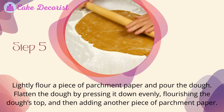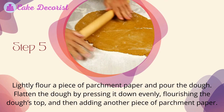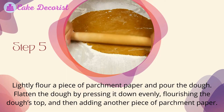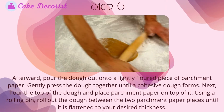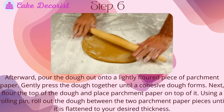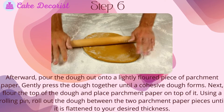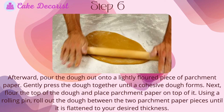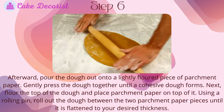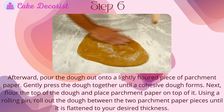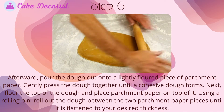Step five: lightly flour a piece of parchment paper and pour the dough onto it. Flatten the dough by pressing it down evenly, flour the dough's top, then add another piece of parchment paper. Gently press the dough together until a cohesive dough forms.